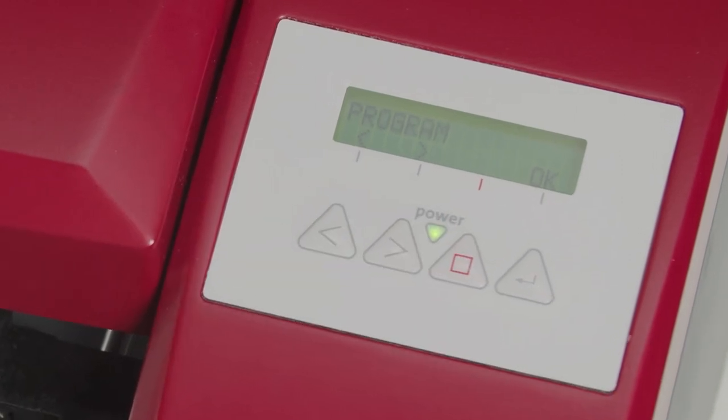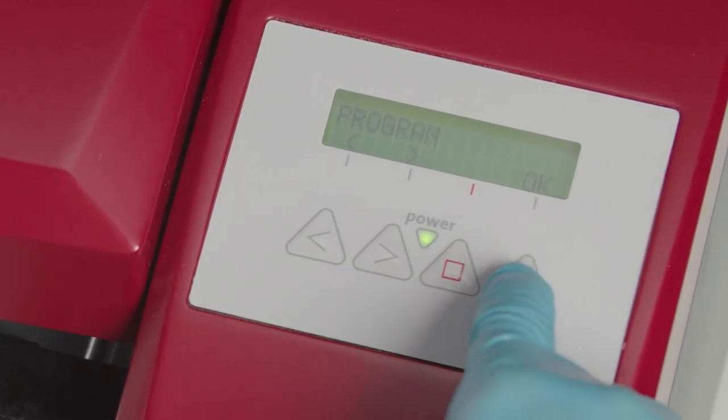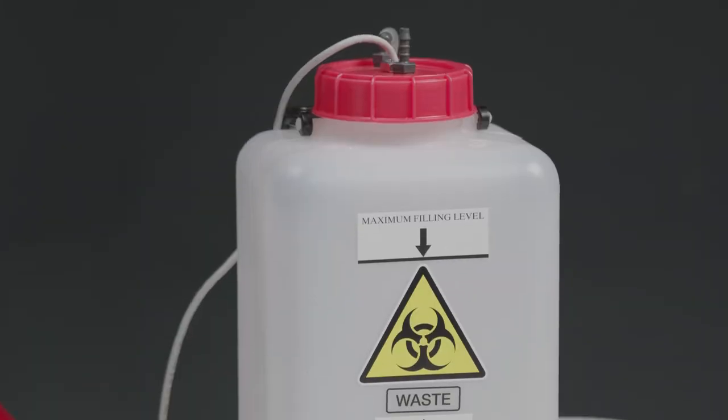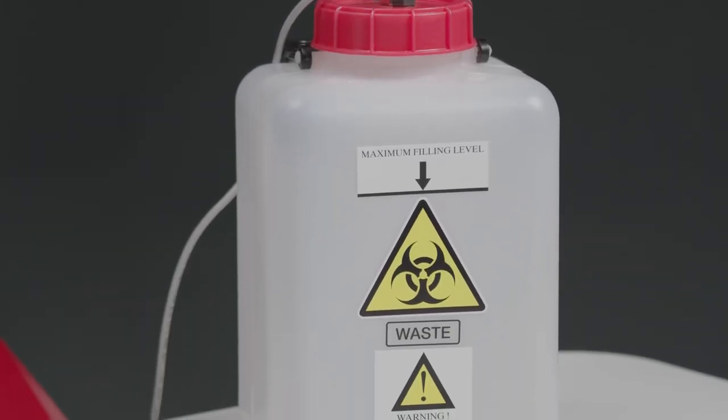To start the process, enter the program menu with OK. Confirm start and select the program Run. Click Yes if you have already primed the selected channel. And remember to check the level of the waste bottle.